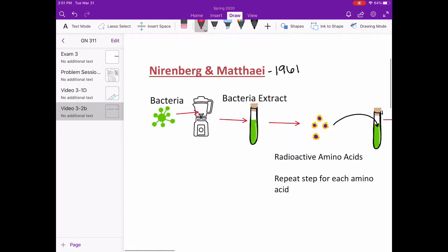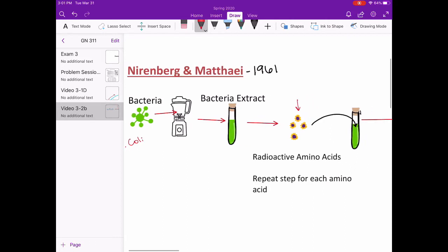Nirenberg and Matthaei took the bacteria E. coli and blended it up and degraded the DNA to get a ribosome-rich bacteria extract. They tagged an amino acid by making it radioactive and added it to the extract.